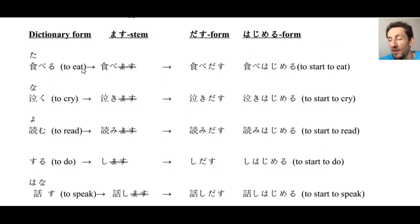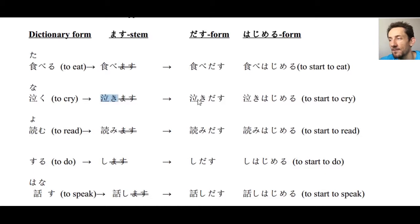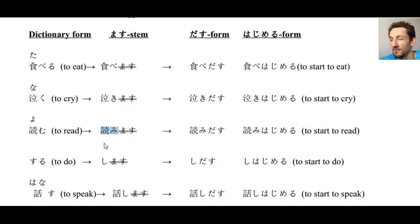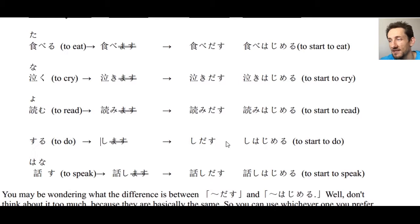For example, taberu means to eat. The masu stem is tabe. We add dasu to get tabe dasu, or hajimeru to get tabe hajimeru — to start eating. Naku gives us naki as the masu stem, so naki dasu or naki hajimeru — to start crying. Yomu gives yomi dasu or yomi hajimeru. And suru gives shi, so shidasu or shi hajimeru — to start doing.